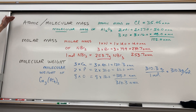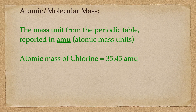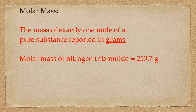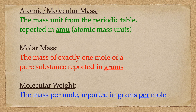I hope that clears up the difference between atomic and molecular mass, molar mass, and molecular weight. Recall simply that atomic or molecular mass is reported in atomic mass units, molar mass is reported in grams, and molecular weight is reported in grams per mole. See you again on Chemist Corner.